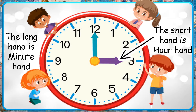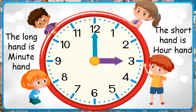The short hand is our hour hand. You can see the purple hand — that short hand is called the hour hand. When the long hand is at 12 and short hand is at 3, it is 3 o'clock. If the long hand is at 12 and short hand is at 5, it is 5 o'clock.